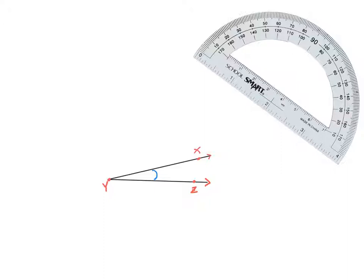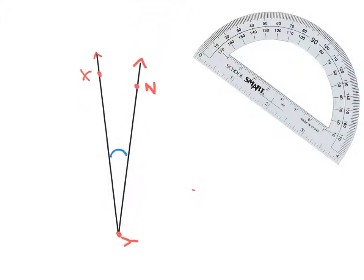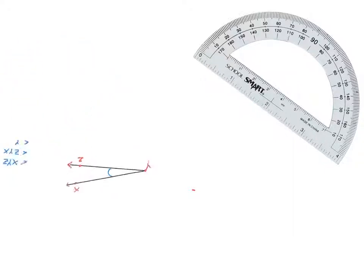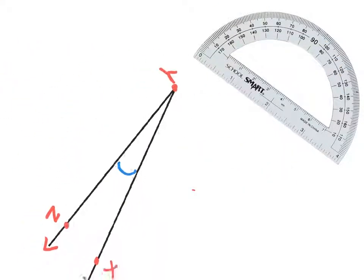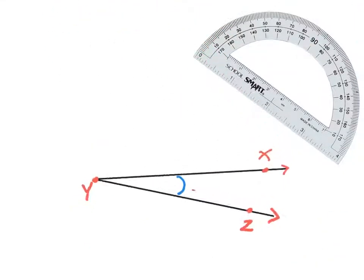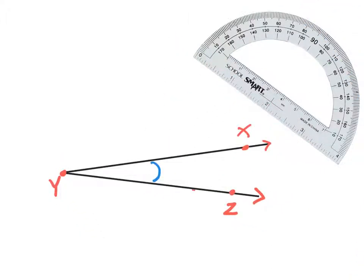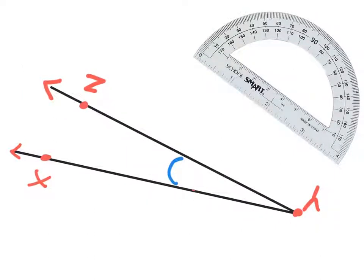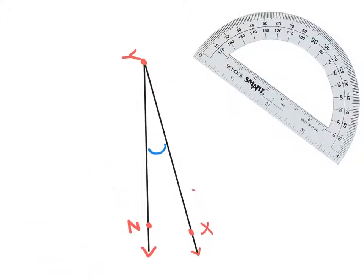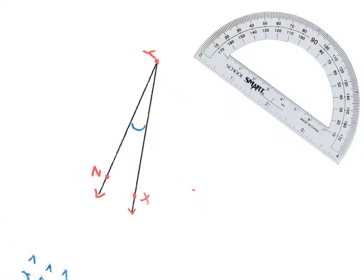Here's another example: angle XYZ, also called angle ZYX or just angle Y. This angle is definitely acute — it is way less than 90 degrees. I want to show you that no matter what you do with this angle — rotate it, enlarge it, shrink it, flip it upside down or backwards — the blue arc, the space between each side of the angle, is not changing. So just because you're used to seeing an angle opening to the right, if you see one opening to the left or upside down, it makes no difference; you use the same procedure to measure it.